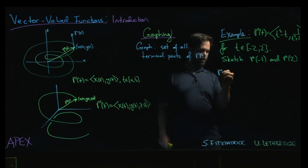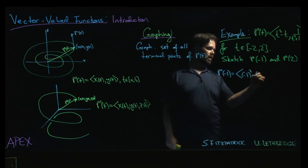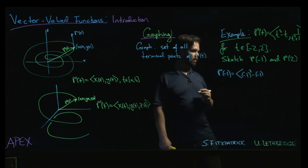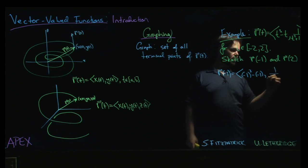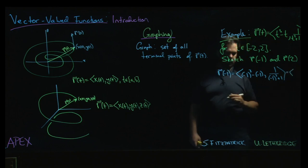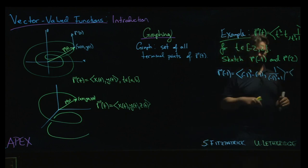So r of minus 1, we get minus 1 cubed, subtract minus 1, and then 1 over minus 1 squared plus 1. So that vector, that's going to be minus 1 plus 1, we get 0, and then 1 over 2. So 0 and 1 half, that's our first vector.